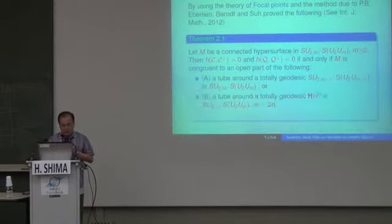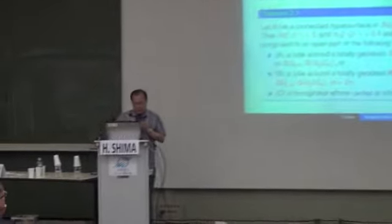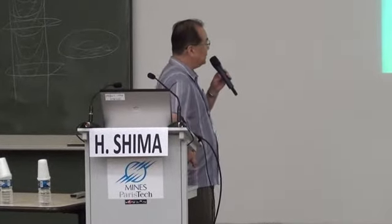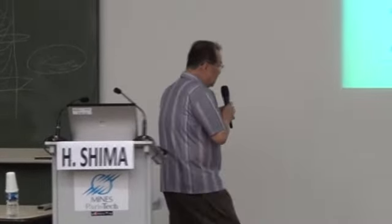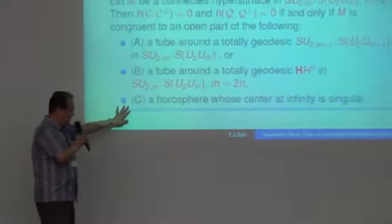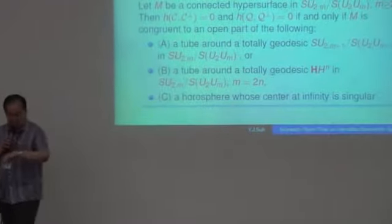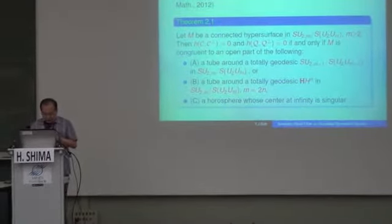Last year, in non-compact complex hyperbolic space, we also classified — under certain conditions — three types of hypersurfaces. Among these three types, there appears a horosphere, or the center type, and an improper singular one.